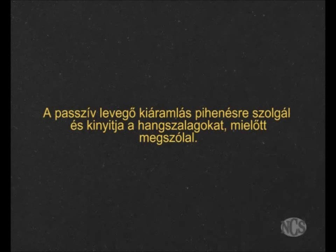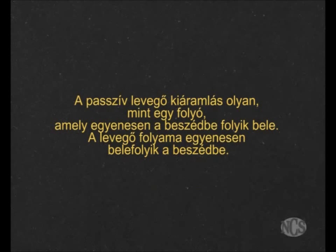You have plenty of air left for speaking, but this first air that's coming out — this passive outflow of air — is used to relax and open your vocal cords before you speak. Here are some examples of passive flows. This young woman's mouth is open slightly and she's breathing very gently in and out through her mouth. The air is totally passive and the mouth is open. The passive outflow of air is like a river that flows directly into speech.